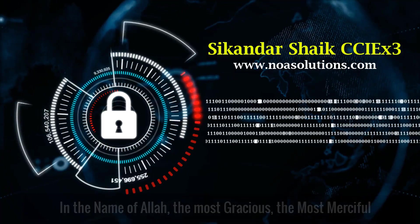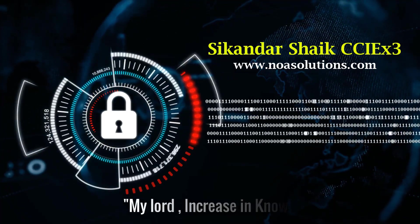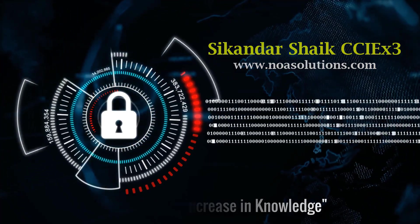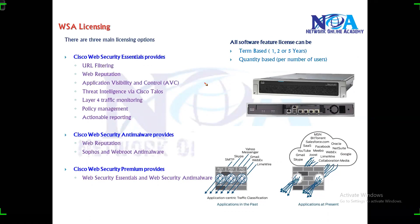Bismillahirrahmanirrahim. Next, let's look at the licensing options with Cisco WSA. Once you have your model, whether it is a physical or virtual appliance, you need to get the license. The license is mainly divided into three options, depending upon the number of features you want to support.